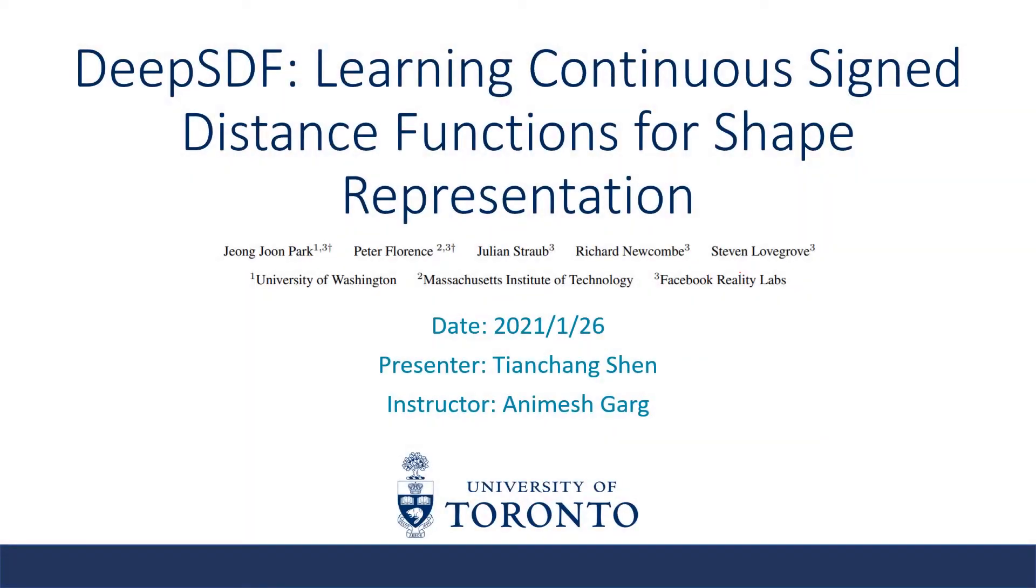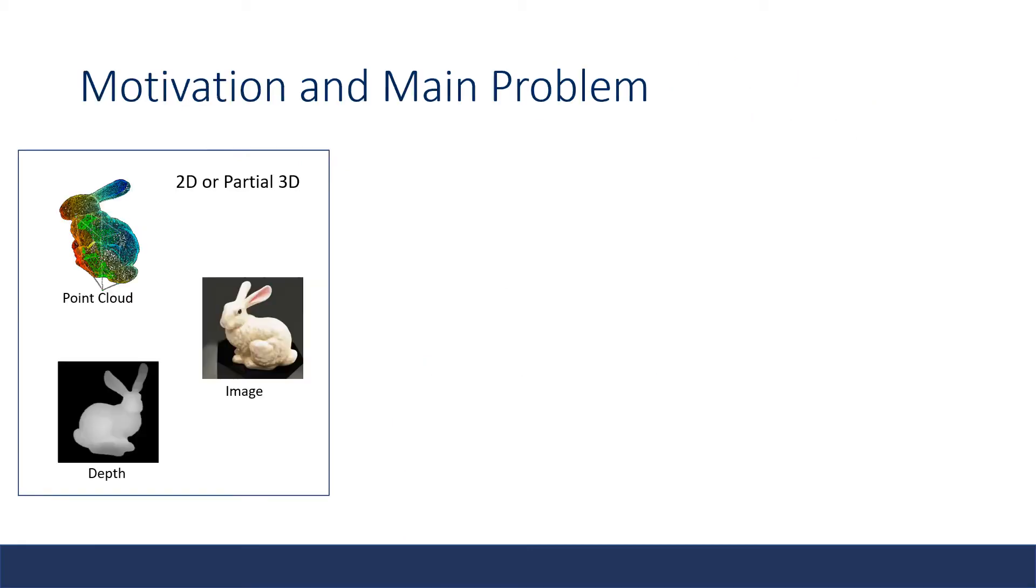In this video, I will present the paper Deep SDF Learning Continuous Sign Distance Function for Shape Representation. 3D reconstruction, also commonly addressed as the inverse graphics problem, is about recovery of 3D objects from 2D or partial 3D observations.